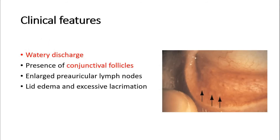Clinical features of viral conjunctivitis: unlike bacterial conjunctivitis with purulent discharge, viral conjunctivitis presents with watery discharge and conjunctival follicles. These follicles are raised gelatinous oval lesions around 1 mm in diameter, found usually in the lower tarsal conjunctiva and upper tarsal border, sometimes at the limbus of the eye. There will also be enlarged pre-auricular lymph nodes, lid edema, and excessive lacrimation.